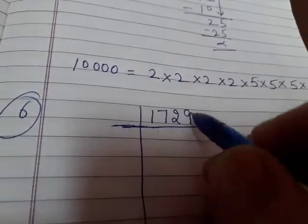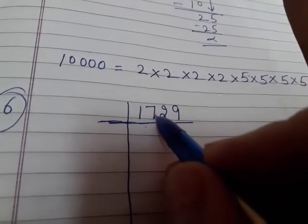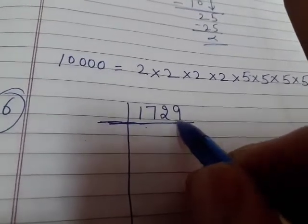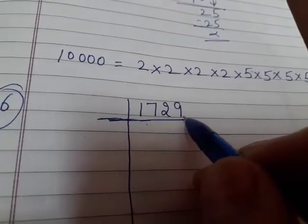Next, is it divisible by 3? Add the digits: 1+7=8, 8+2=10, 10+9=19. Since 19 is not divisible by 3, the number isn't either. It's not divisible by 5 because the ones place is 9. Now we check 7, which is a prime number.